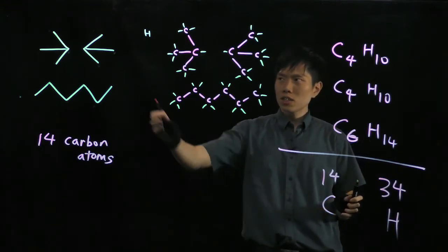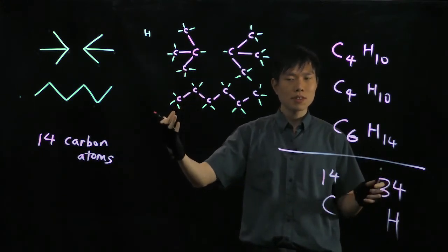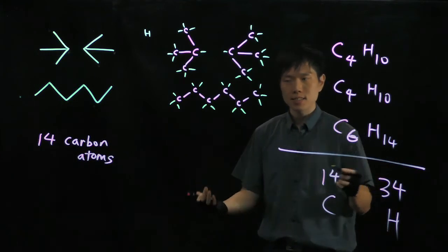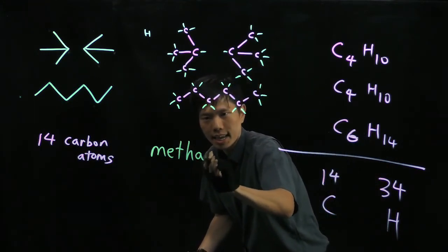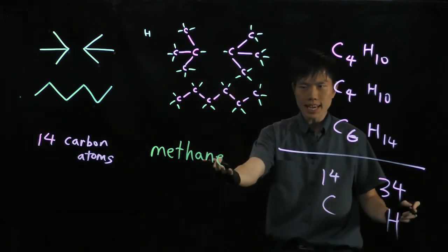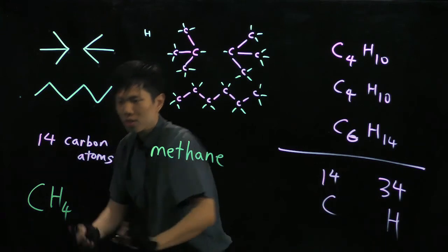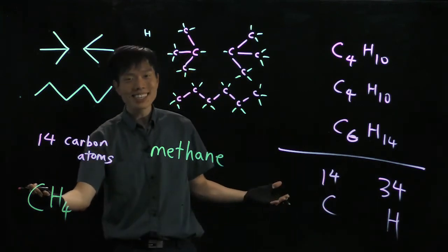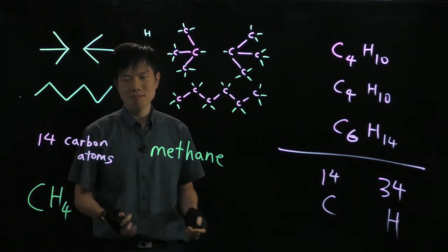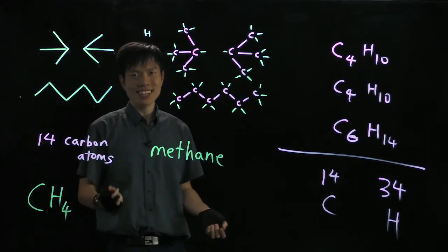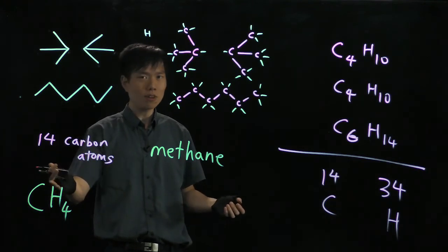Someone may ask: I see lines, so this must be for two carbons and above. So how do we draw methane — the first member in the alkane series — having a formula of CH4, just one single carbon with no carbon-carbon bonds? Make a guess. How do we represent the skeleton structure for methane?